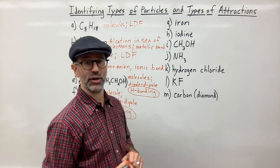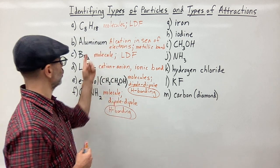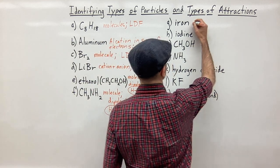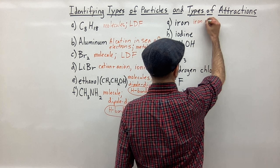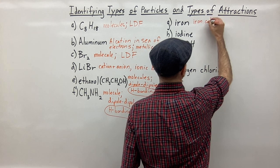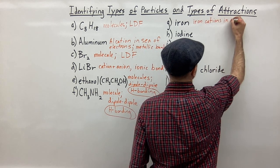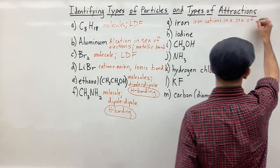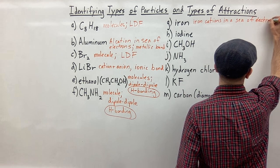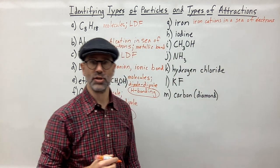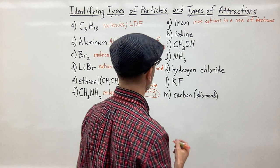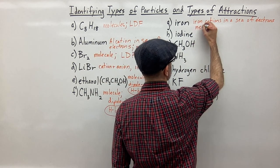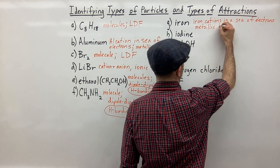Moving on to G — iron. Iron is a metal, so just like aluminum, we're going to have iron cations in a sea of electrons. Those are our particles, and therefore the attractive force is, again, metallic bonds.